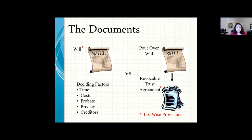A will does not avoid probate entirely. To totally avoid probate, you need a revocable trust — a trust agreement where we create the trust now and transfer assets into it. It uses your Social Security number while you are living, and when you pass away it becomes irrevocable and receives its own tax ID number. Your assets are then distributed according to the terms of that document.